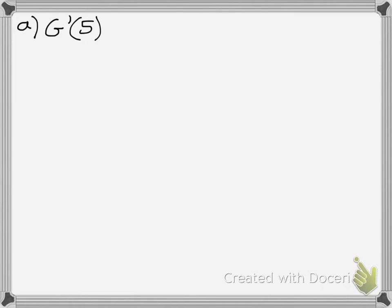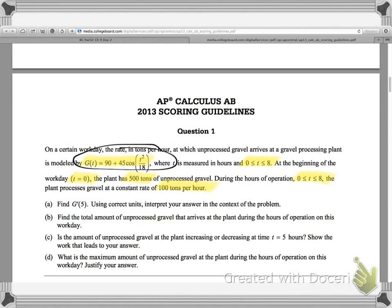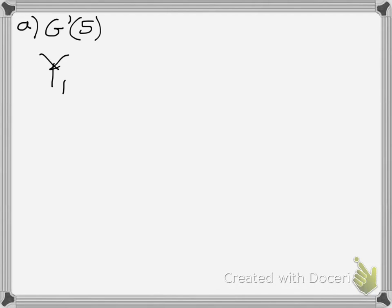Alright, so we're going to answer part A. Basically, it just finds, it says, task for g prime of five. All you do is make y1 your function here, which is g of t. And then you will just do g of t, and then find g prime. This is all calculator based. But you'll find that the rate is negative 24.588 tons per hour. That is the units.